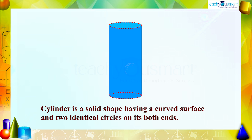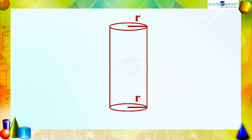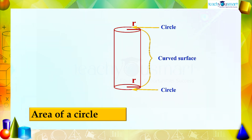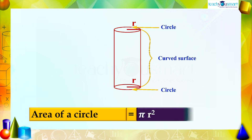Clearly we can say that the surface area of a cylinder is the sum of areas of the curved surface and two identical circles. We know that the area of a circle is πr² with radius r.